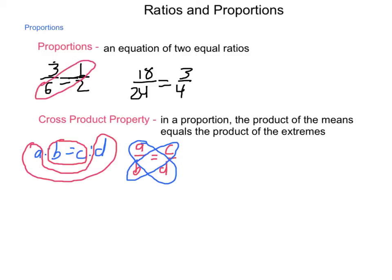So, in the fractions we have above, 6 times 1 is 6, 3 times 2 is 6, 18 times 4 is 72, 3 times 24 is 72. So, our product of our means is equal to our product of our extremes.